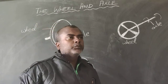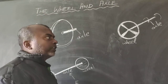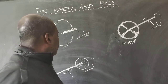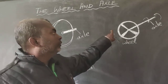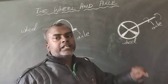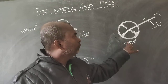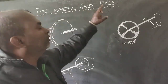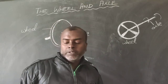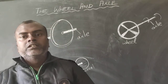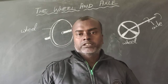It depends on the arrangement of the wheel and axle and where it is employed. Depending on that, either the axle will rotate the wheel or the wheel will rotate the axle. The combination of these two is known as the wheel and axle system. One application of the wheel and axle is the pulley, which is our next topic.